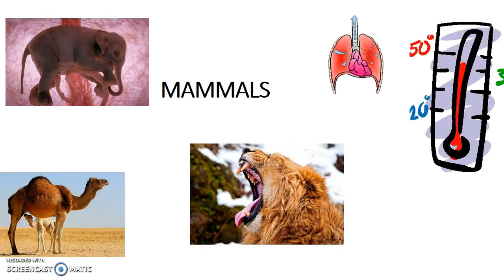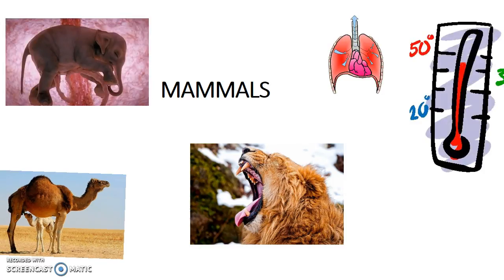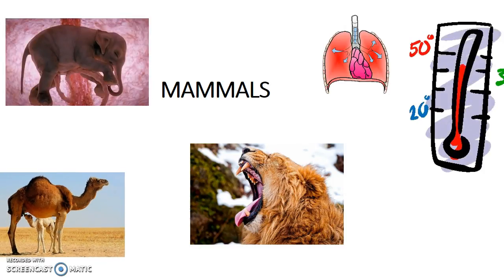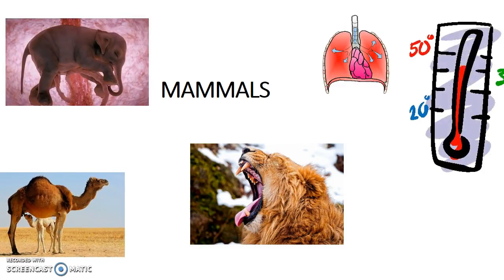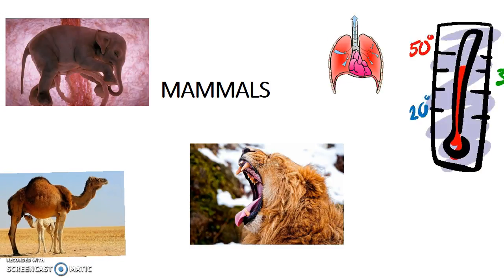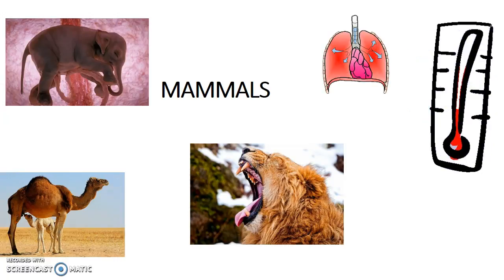First, the mammals. Mammals are viviparous, which means that all of them are born from their mother. In the first days of life, they just eat milk that comes from their mother's breasts. That's where the mammary glands are, and that's the reason why we call them mammals.